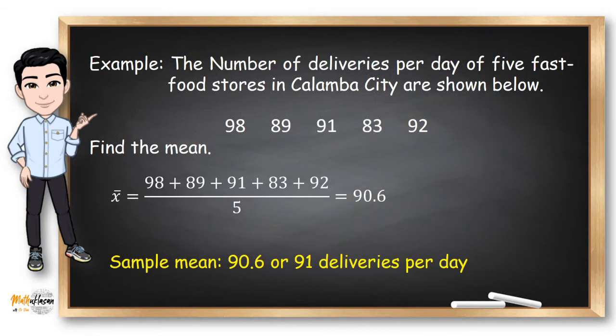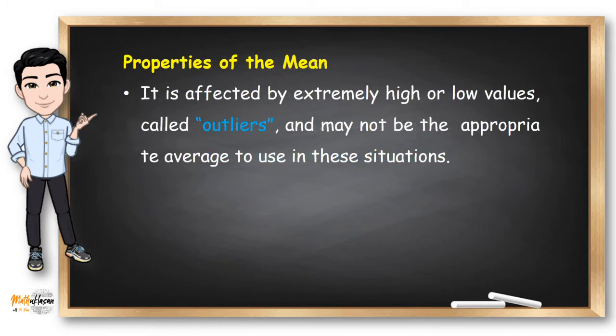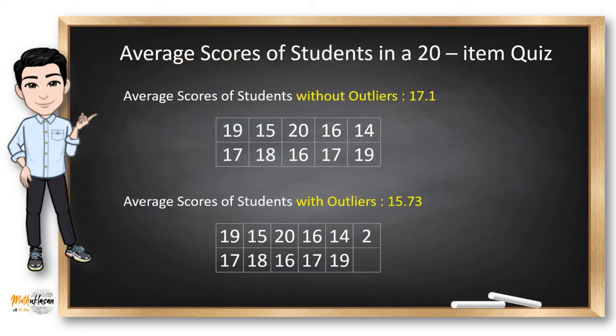In the previous example, 90.6 is within this data set, but it's not exactly one of them, right? Mean is also affected by extremely high or low values called outliers and may not be the appropriate average to use in this situation.